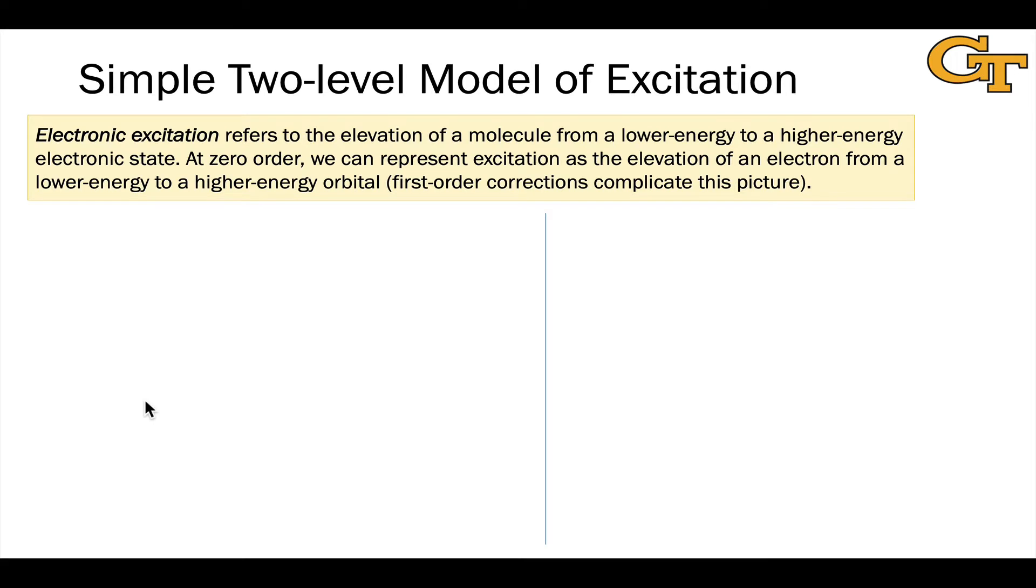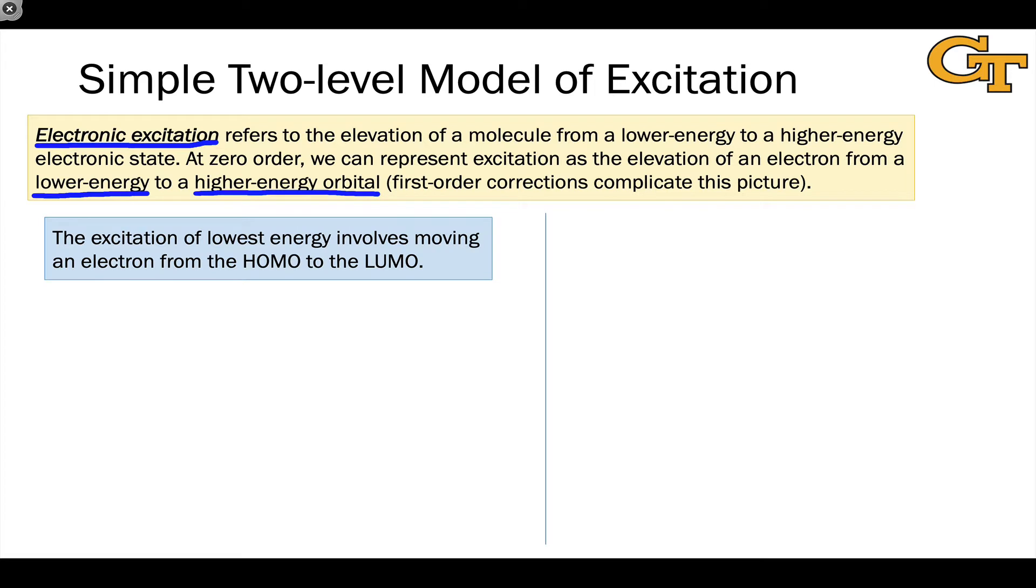Let's start with electronic excitation. When a molecule is excited to a higher electronic state, what exactly does that mean? The molecule accepts or gains energy as the result of absorption of a photon, for example. To a zero-order approximation, we can represent electronic excitation as the elevation of the energy of an electron from a lower state to a higher state. Or put another way, the electron moves from a lower energy orbital to a higher energy orbital.